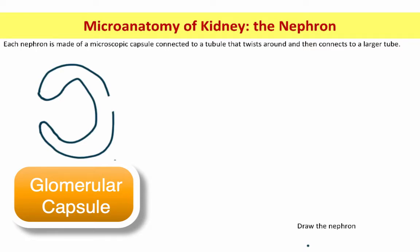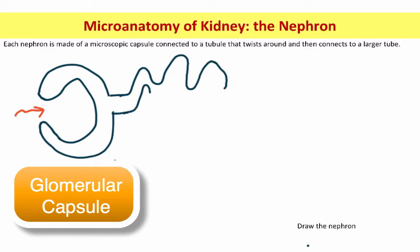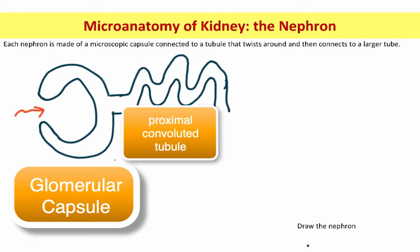I prefer the term glomerular capsule because it's more anatomically accurate. The glomerular capsule is a three-dimensional, cup-like structure with a tiny opening right in here and then a larger opening in the back. It leads into this tiny twisty tube. That tiny twisty tube is attached to the glomerular capsule, so we say it's the proximal convoluted tubule.